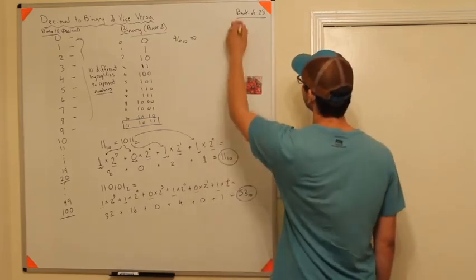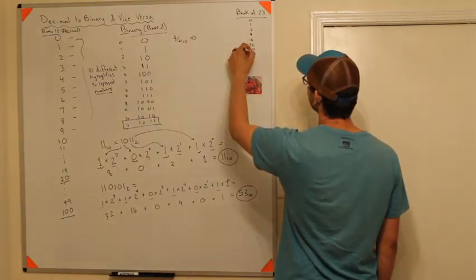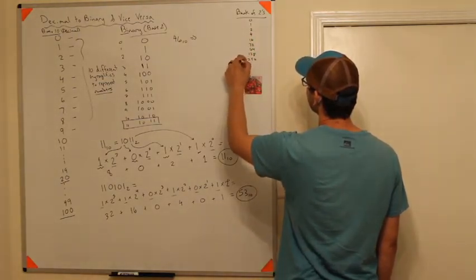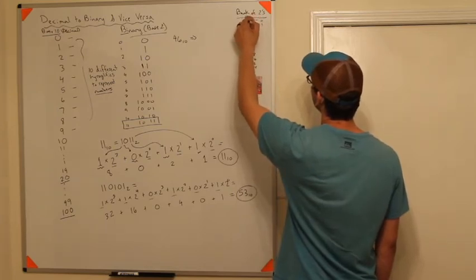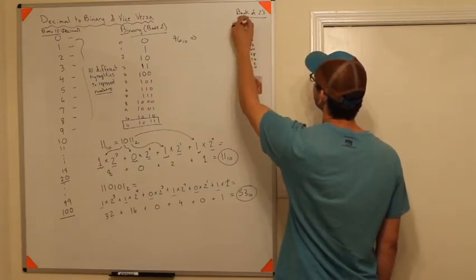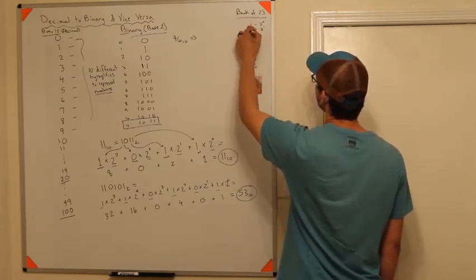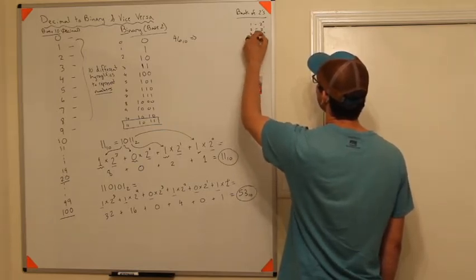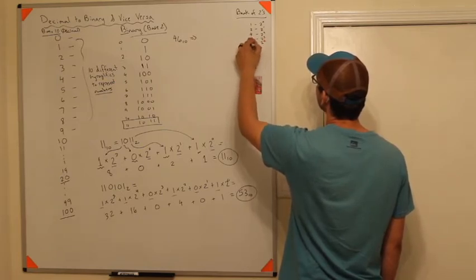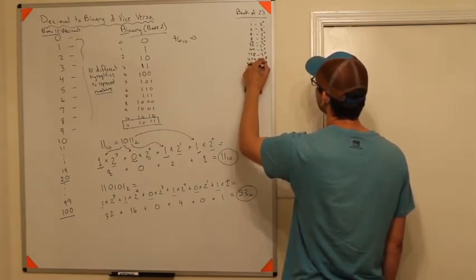So you get the bank of twos. The powers of 2 are: 1, 2, 4, 8, 16, 32, 64, 128, 256, 512, 1024. Next to each you write its exponent: 2 to the 0 is 1, 2 to the 1 is 2, 2 to the 2 is 4, 2 to the 3 is 8, 2 to the 4 is 16, 2 to the 5 is 32, 2 to the 6 is 64, 2 to the 7 is 128, 2 to the 8 is 256, 2 to the 9 is 512, 2 to the 10 is 1024.